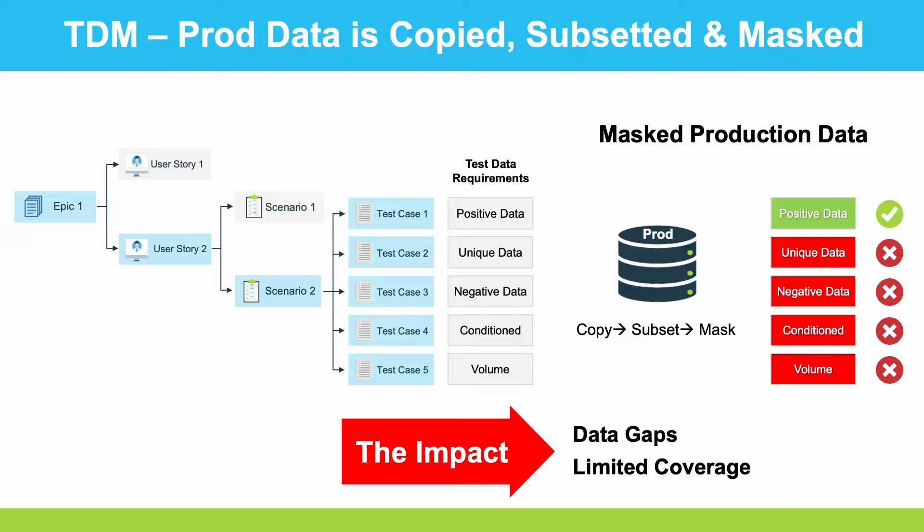You cannot get new or unique data from production data copies, can't get negative data. It's only about 2% or 3% of edge case data, and data based upon particular rules and conditions is not available. There are just a lot of data gaps and limited coverage.